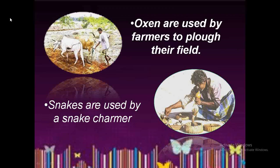Farmers use oxen to plow their fields, which is why oxen are known as the farmer's friend. Snake charmers are people who use snakes to entertain the public by playing a flute. They first remove the poison sac and the teeth of the snakes. As they play the flute, snakes sense the vibration and show different types of body movement, appearing to dance. People give money to the snake charmers, and this is how they earn their livelihood.